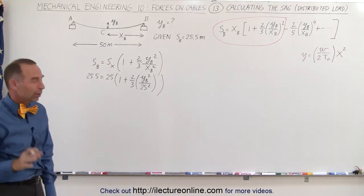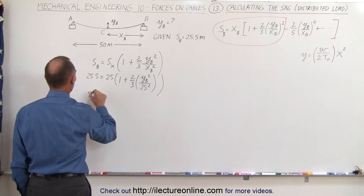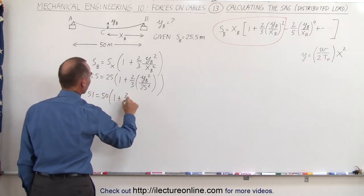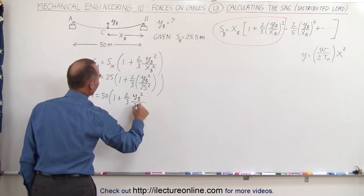And then, to get rid of the decimal place, we'll multiply both sides by 2, so we get 51 equals 50 times one plus two-thirds Y sub B squared divided by 25 squared.